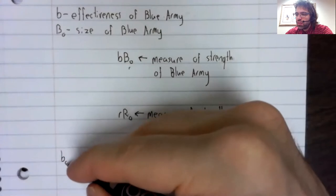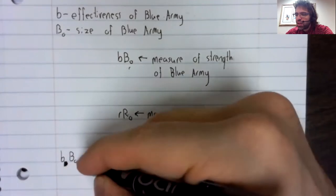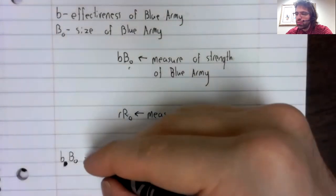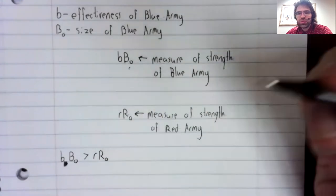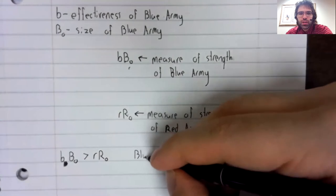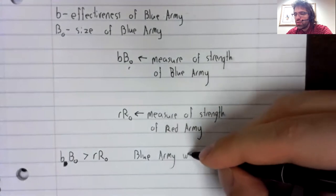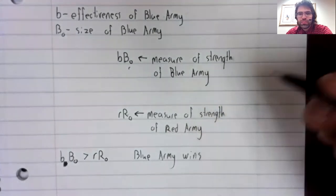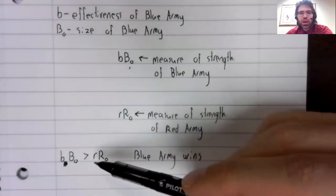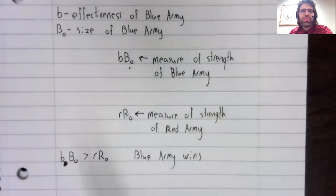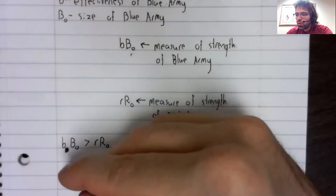So when you think in these terms, the statement that if B times B sub zero is greater than R times R sub zero, blue army wins. Now that's hardly a surprising statement, is it?